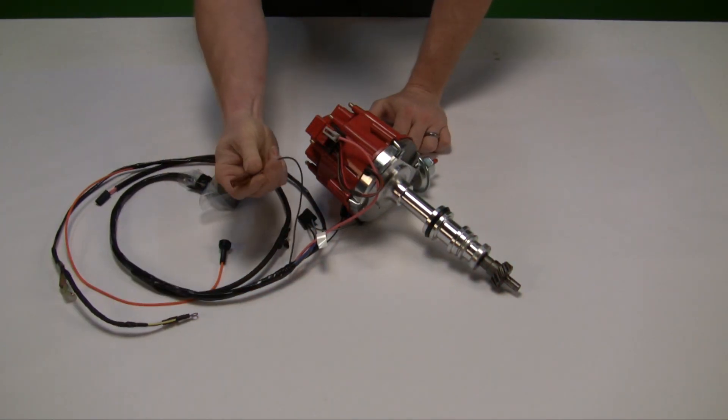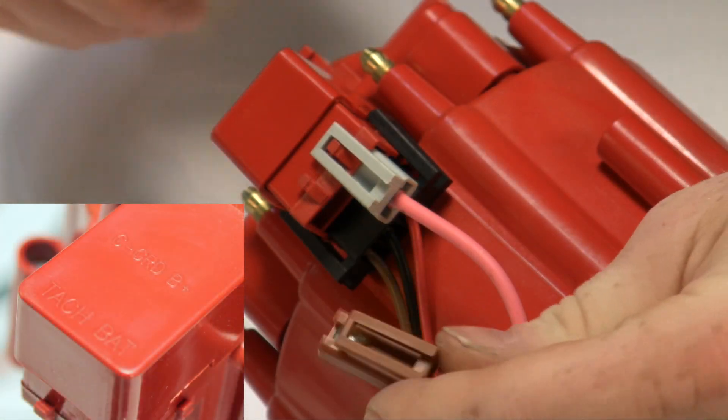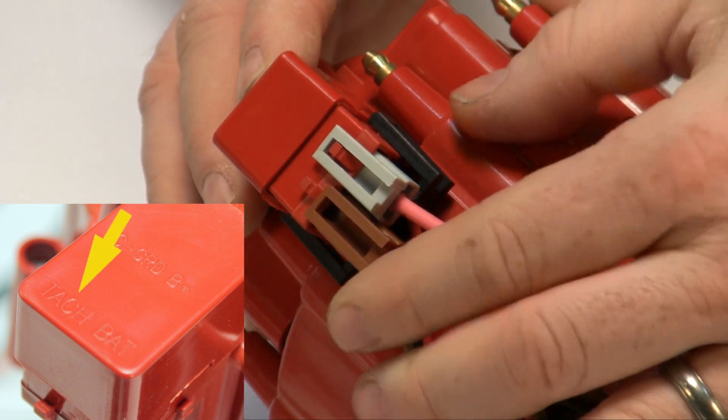If the car has a factory tach or it's been upgraded to have a tach, this is the tach connection that plugs in next to the BAT location on the HEI cap.